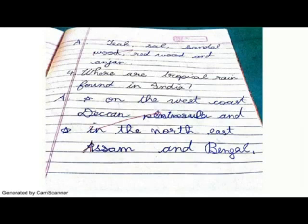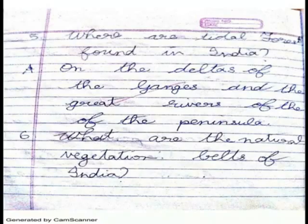Where are tidal forests found in India? Tidal forests are found on the deltas of the Ganges and the great rivers of the peninsula.